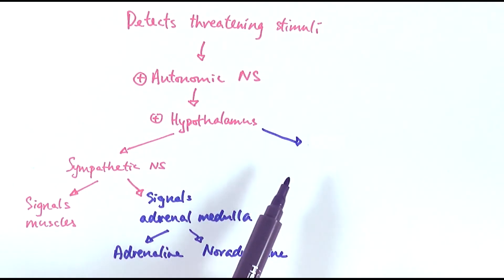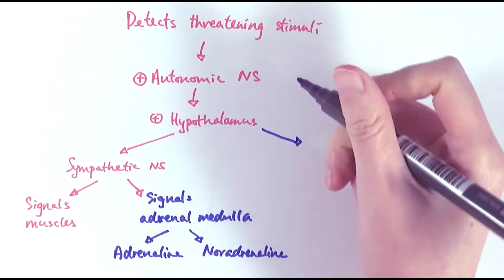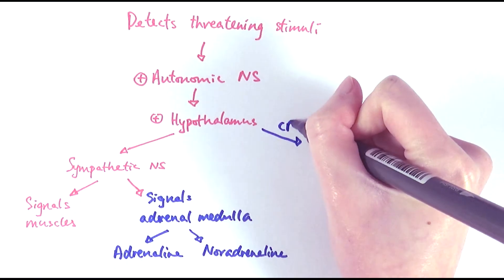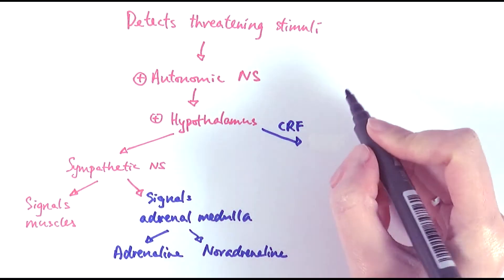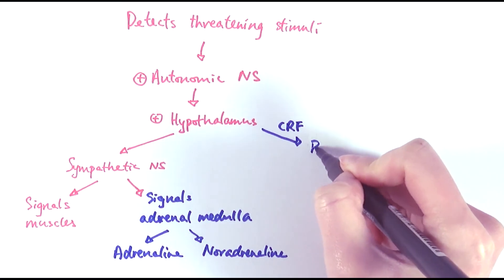The hypothalamus could also signal the endocrine systems directly. The first step is that they could release a hormone called CRF, which can stimulate the pituitary gland.